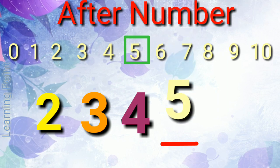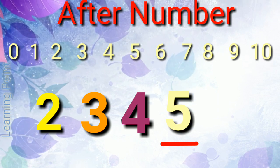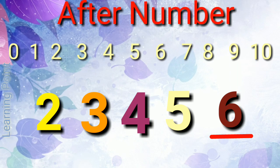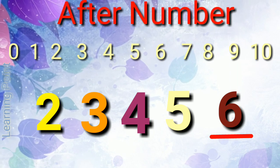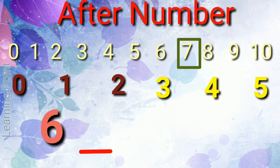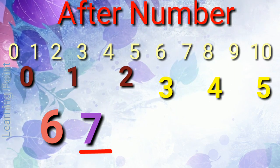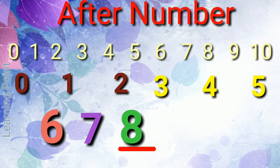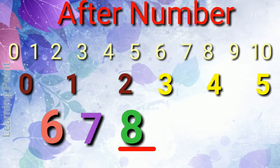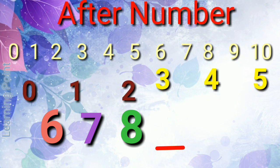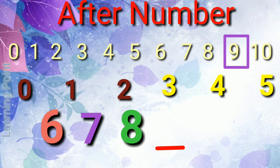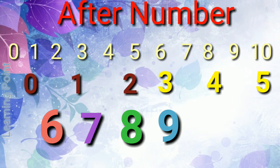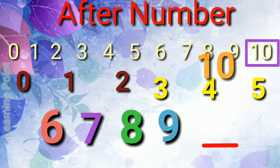5 is after 4. You tell me which number will come now? Yes, that is 6. 6 is after 5. Next comes 7. Number 7 is after 6. Now, number 8 will come. Number 8 is after 7. You tell me which number comes now? Yes, that is 9. 9 is after 8. After 9, which number will come? That is 10.